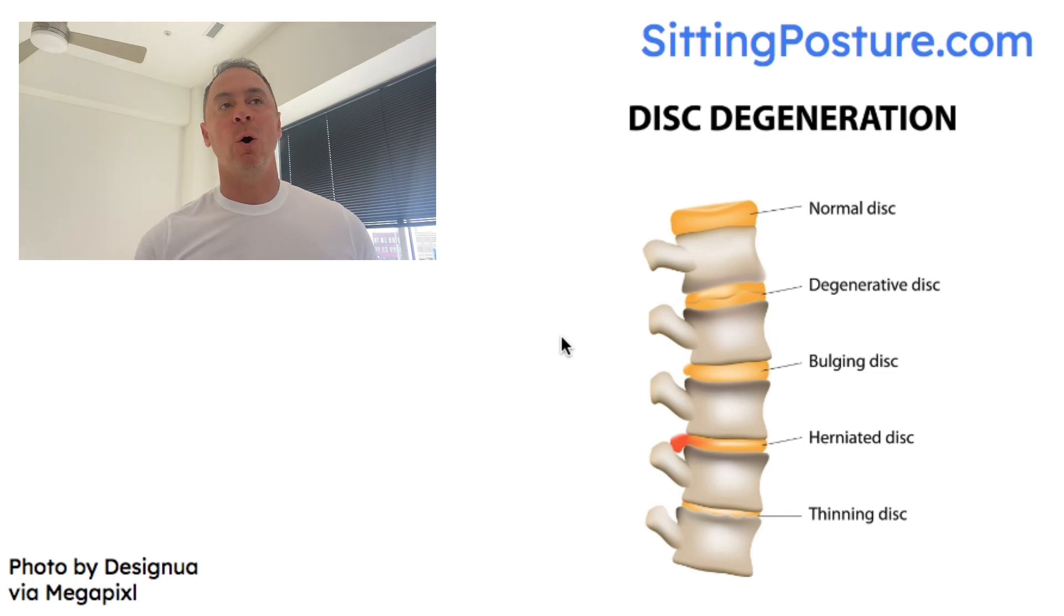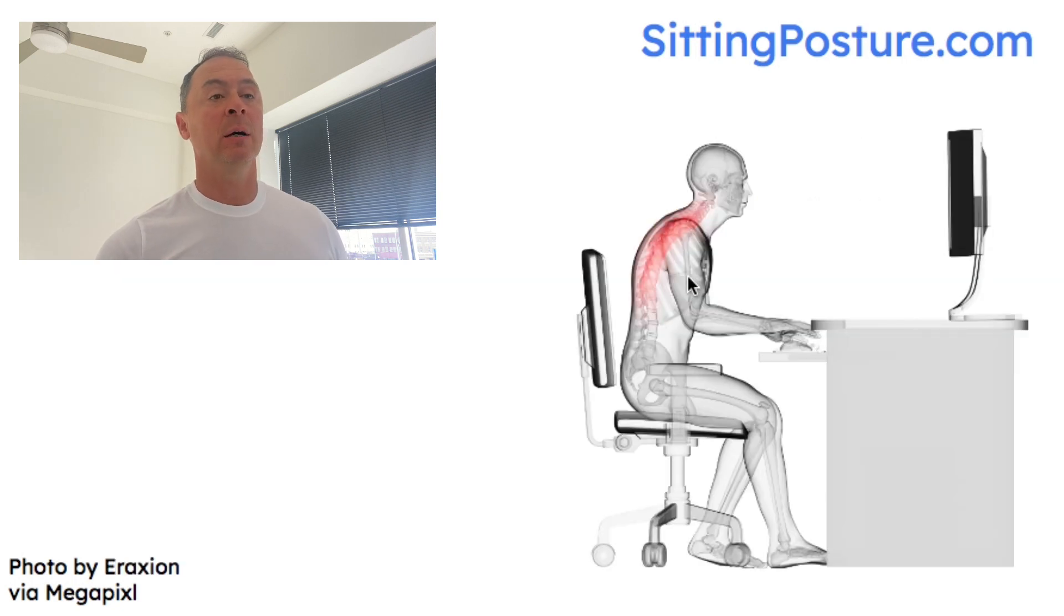So that is what happens when we hold our spine in a compromised, vulnerable position when it's not including those natural curves. And here's an example of it here, slouching forward. This is a great example.